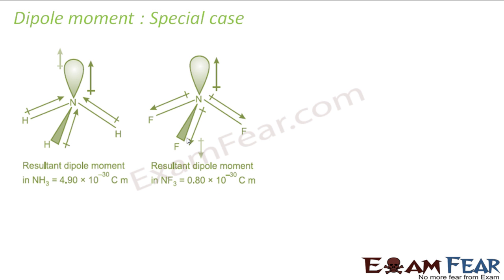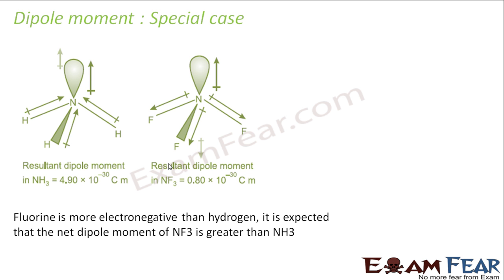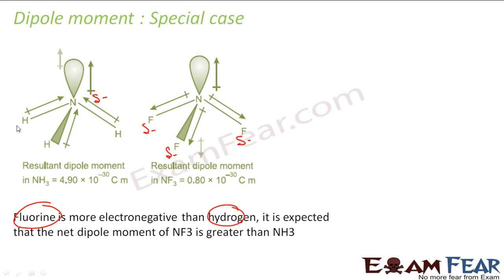There is a special case: compare NH₃ and NF₃. Fluorine is more electronegative than Hydrogen. In NF₃, Fluorine gets a lot of partial negative charge. In NH₃, Nitrogen is more electronegative than Hydrogen, so Nitrogen gets partial negative charge and each Hydrogen gets partial positive charge. The individual bond dipole of NF₃ is stronger. But the net dipole moment of NH₃ is greater than that of NF₃.